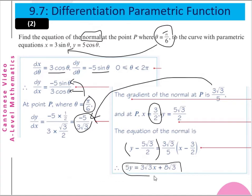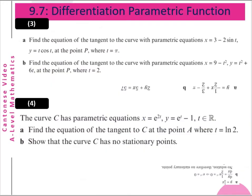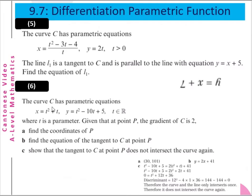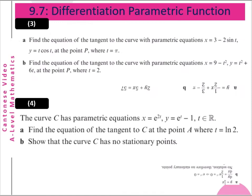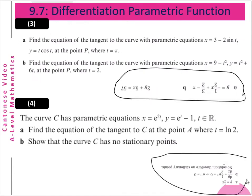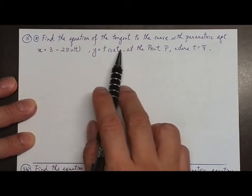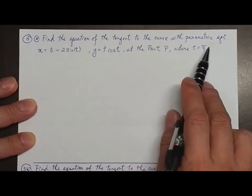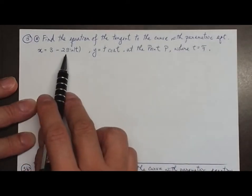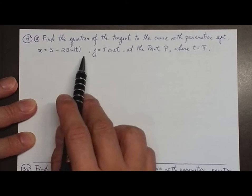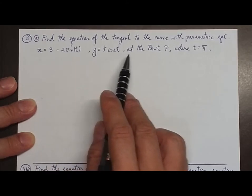After these two examples, we go to the exercises: Questions 3, 4, 5, and 6. As before, you can check your answers. Question 3a: Find the equation of the tangent to the curve with parametric equations x equals 3 minus 2 sin t, y equals t cos t, at point P where t equals π.